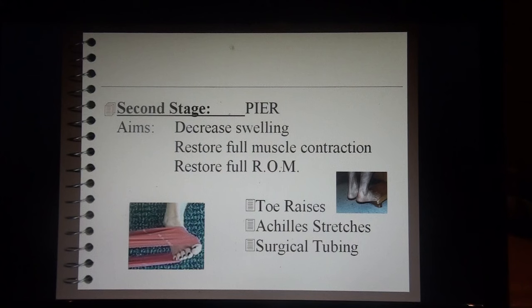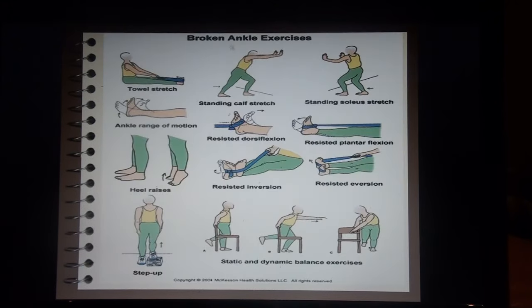In our second stage, we continue with PEER. Now we want to decrease swelling, restore full muscle contraction, and restore full range of motion. Example exercises include toe raises, Achilles stretching, and surgical tubing for strengthening. There are additional ankle exercises available to review.